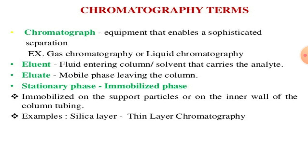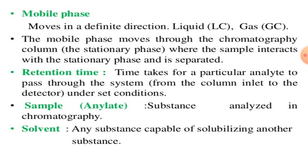The stationary phase is also called the immobilized phase, immobilized on support particles or on the inner wall of the column tubing — for example, the silica layer used in thin layer chromatography. The mobile phase moves in a definite direction and is always in liquid or gaseous form, passing through the chromatography column where the sample interacts with the stationary phase and gets separated.